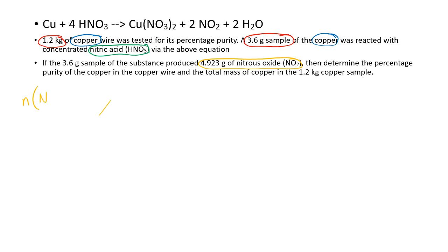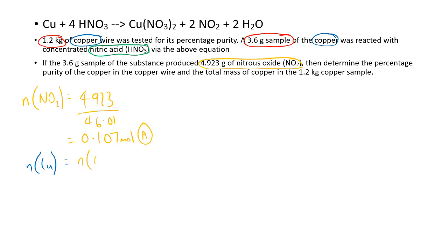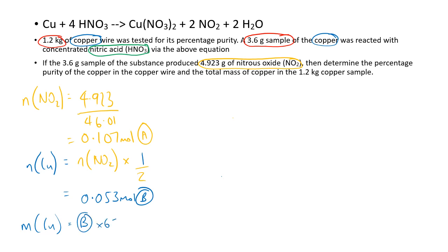The number of moles of nitrous oxide = 4.923 ÷ 46.01 = 0.107 moles. Save as A. The number of moles of copper from the moles of nitrous oxide: coefficient of copper is 1, coefficient of nitrous oxide is 2, so moles of Cu = A × (1/2) = 0.053 moles. Save as B. Then the mass of copper = B × 63.55 = 3.4 grams.